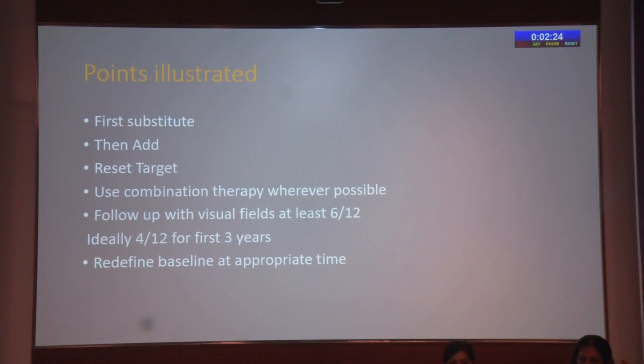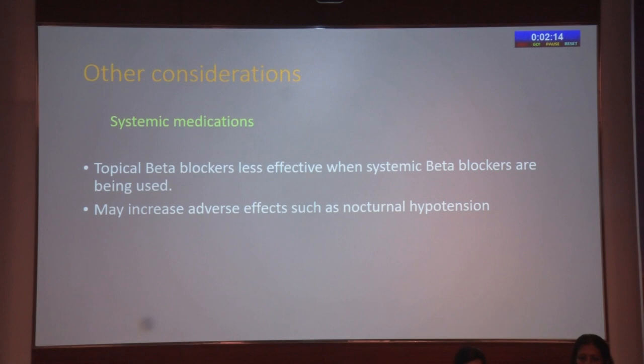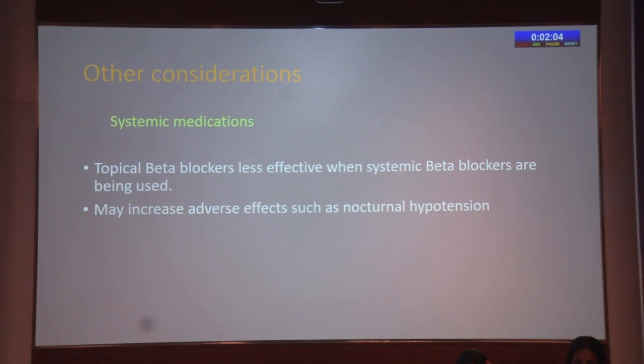Points illustrated by these cases: first substitute, then add; reset the target; use combination therapy wherever possible; follow up with visual fields at least once every six months; and redefine the baseline visual field at the appropriate time. Remember that topical beta blockers are less effective when systemic beta blockers are being used and may increase adverse effects such as nocturnal hypotension. Many patients are elderly and on multiple drugs, so systemic drug interaction is possible.